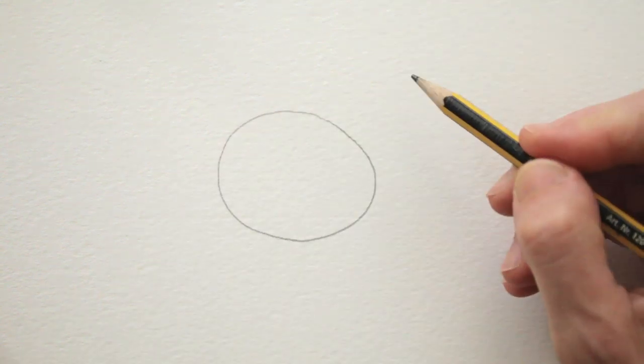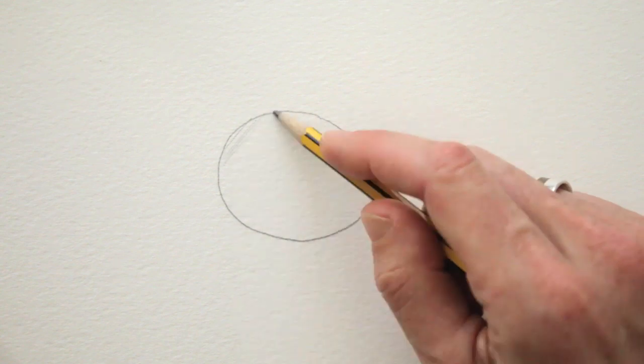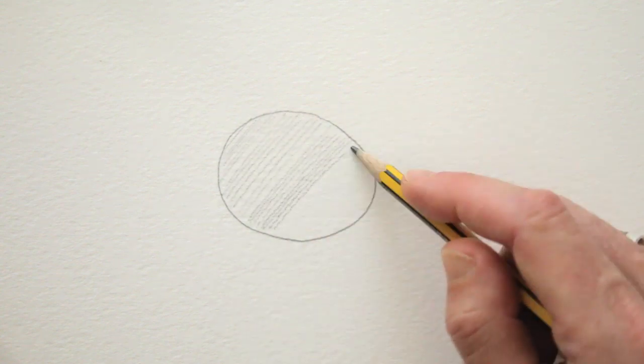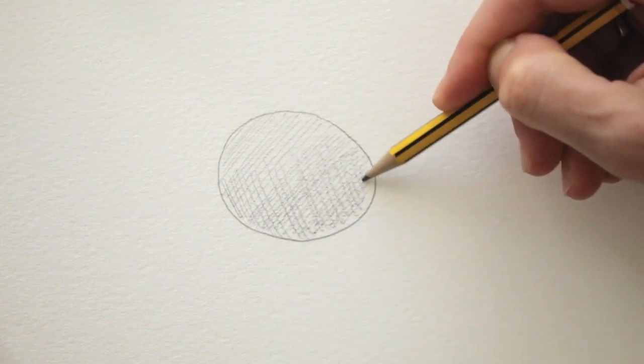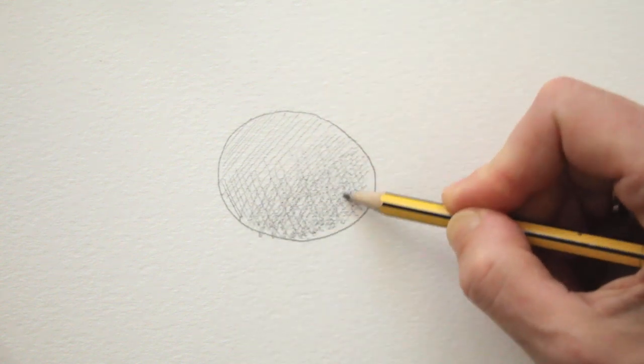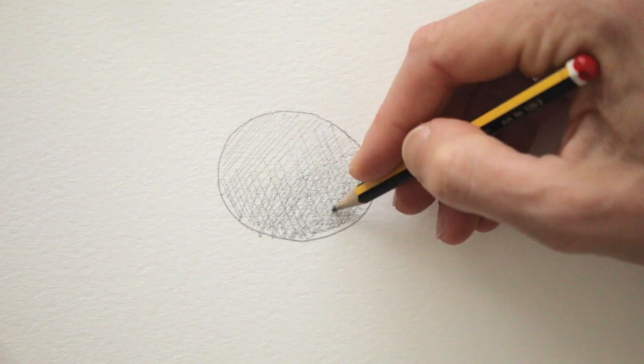When you draw something that is round, you can draw the different values by hatching and crosshatching. The different layers build up to different values and gradations. See, the top part is lit, so it has lighter values and less hatching.